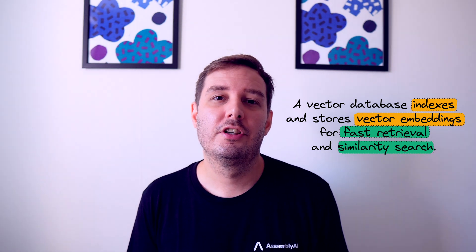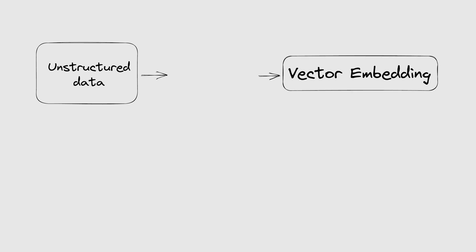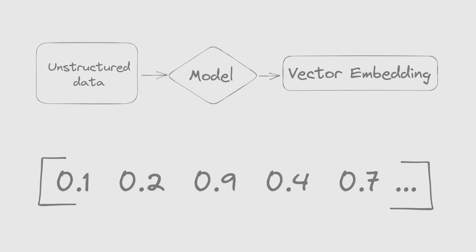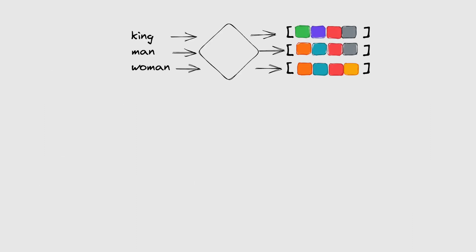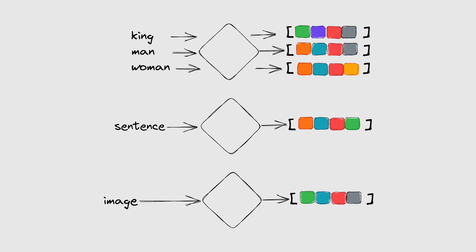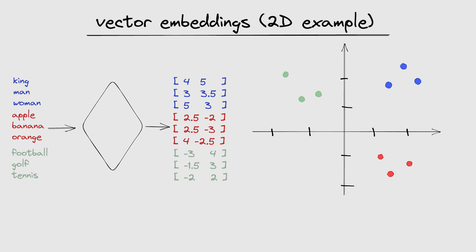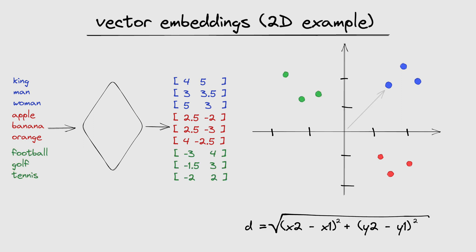In short, a vector database indexes and stores vector embeddings for fast retrieval and similarity search. Let's take a step back and look at those two important components. First, it uses clever algorithms to calculate the so-called vector embeddings — this is done by machine learning models. A vector embedding is just a list of numbers that represents the data in a different way. For example, you can calculate an embedding for a single word, a whole sentence, or an image, and now we have numerical data that the computer can understand. One key possibility we get with vectors is to find similar vectors by calculating the distances and doing a nearest neighbor search.